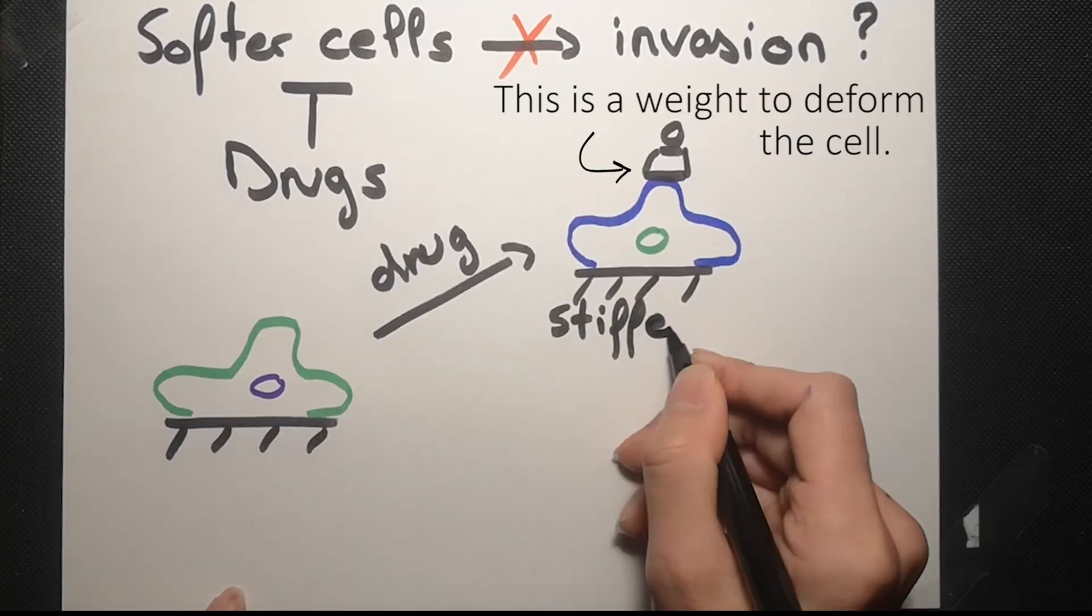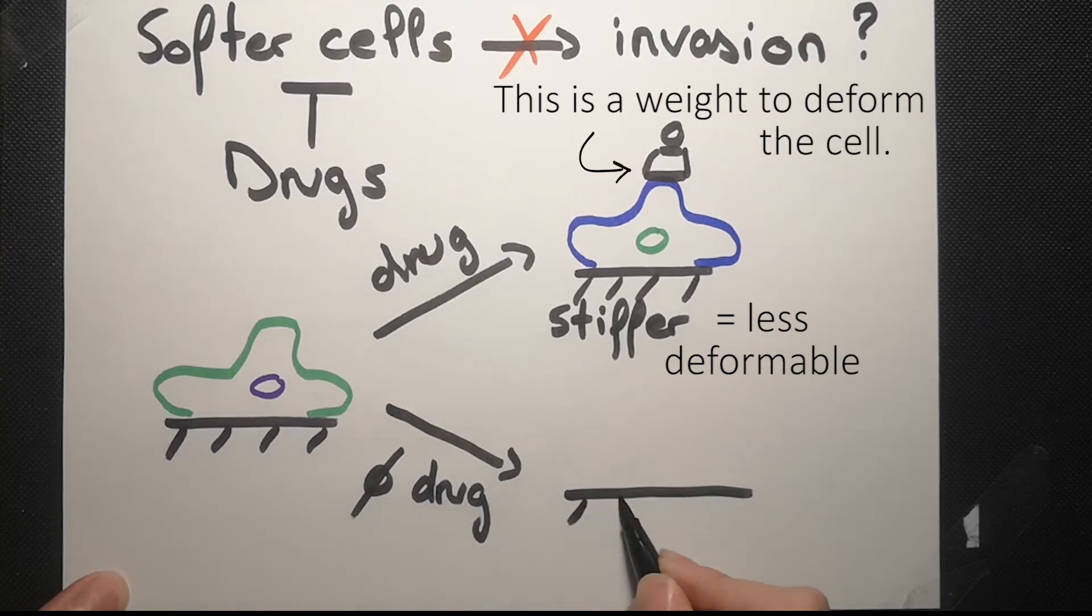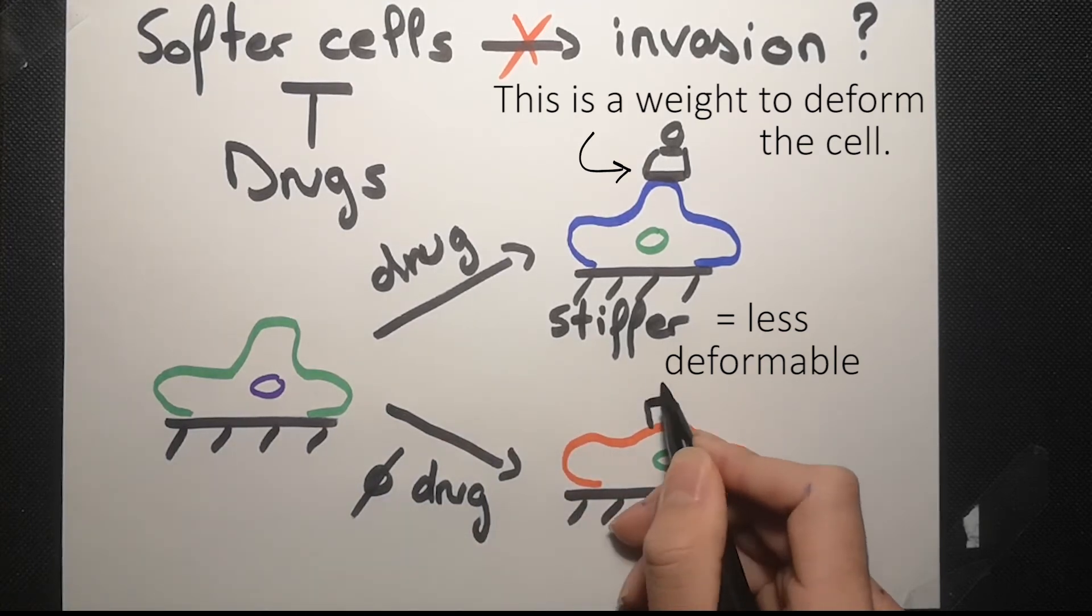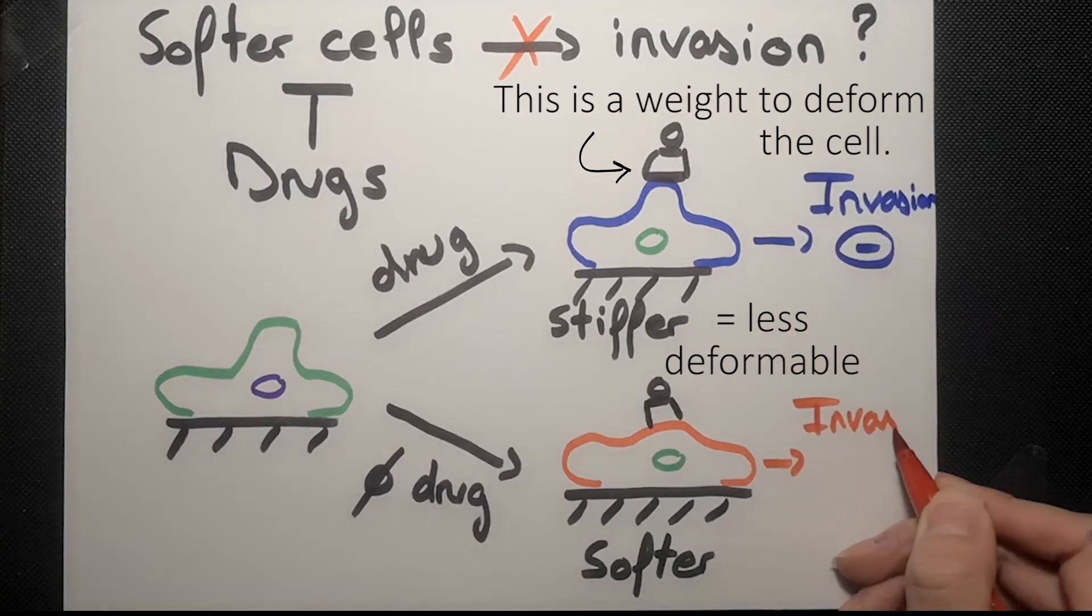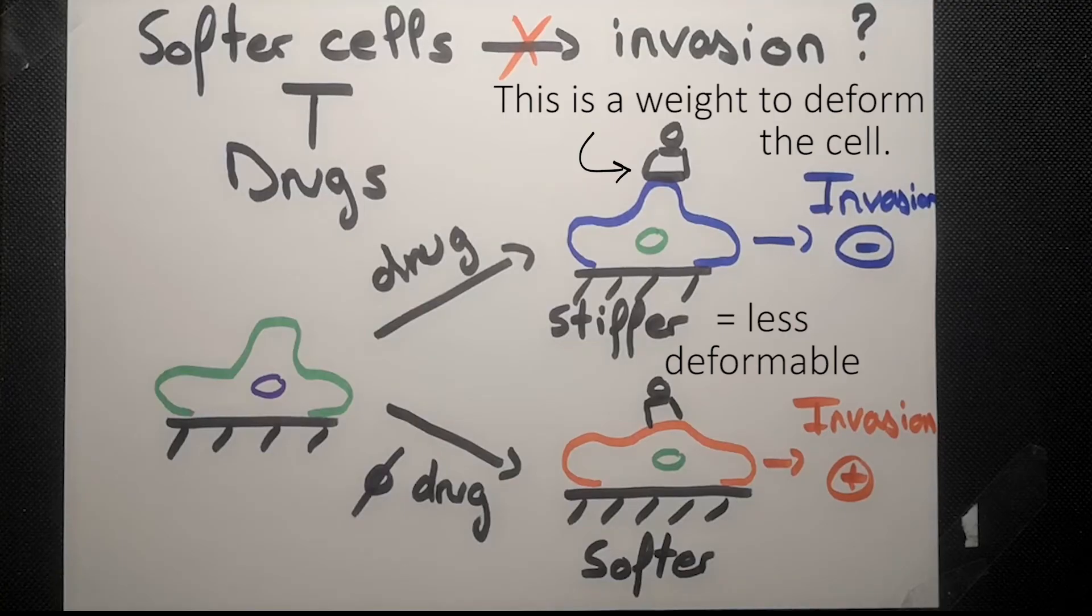But in the control group, up to 60% of cells became invasive. So we can target the softening of cells to reduce tumor invasion.